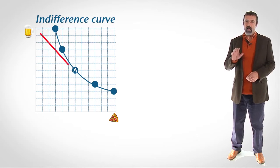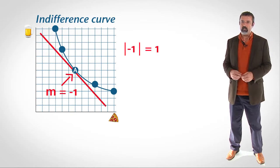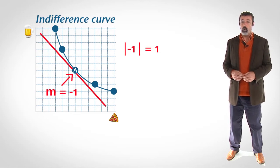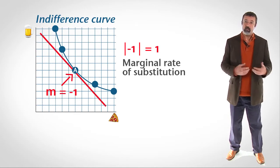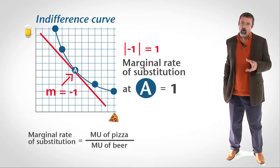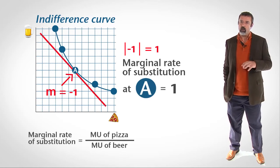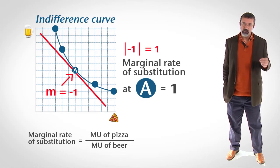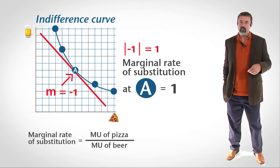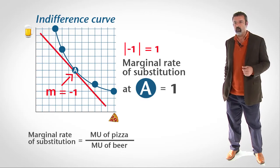As long as you exchange beer for pizza in the ratio of two to one, your total expense doesn't change. The absolute value of the slope of the indifference curve, called the marginal rate of substitution, is the marginal utility of the product on the horizontal axis divided by the marginal utility of the product on the vertical axis.